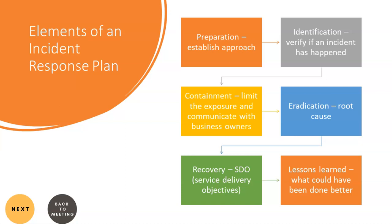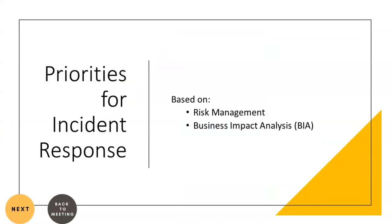The incident response plan has six elements. First, preparation — establishing the approach for incident response. Second, identification — verifying whether an event is actually an incident. Third, containment — limiting exposure and communicating with business owners. Fourth, eradication — completely removing the impact of the incident and performing root cause analysis. Fifth, recovery — bringing systems back to normal state to meet service delivery objectives. Sixth, lessons learned — determining what to do better for similar future incidents.